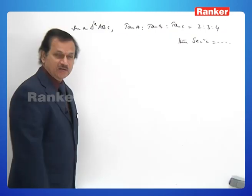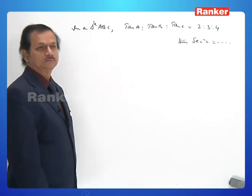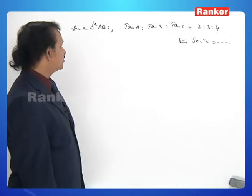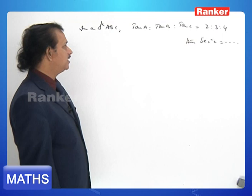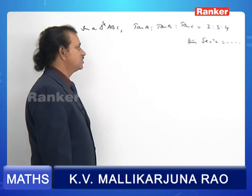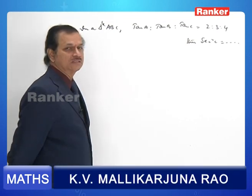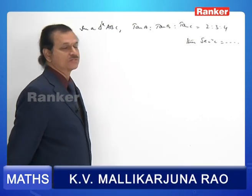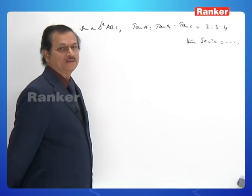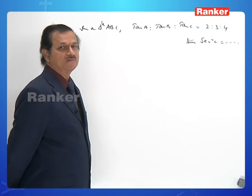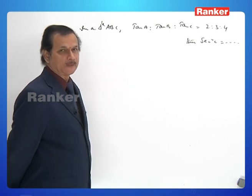The next problem: in a triangle ABC, tan A : tan B : tan C = 2 : 3 : 4. What is the value of sec² C?